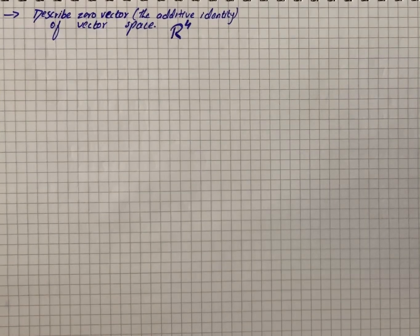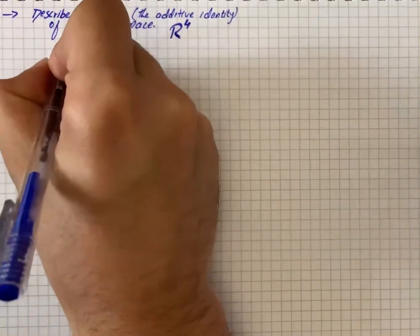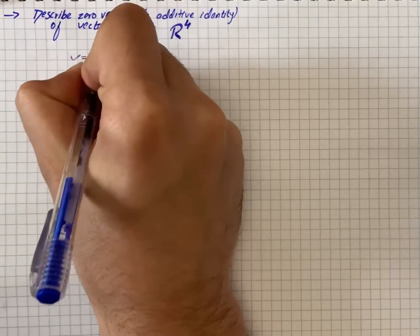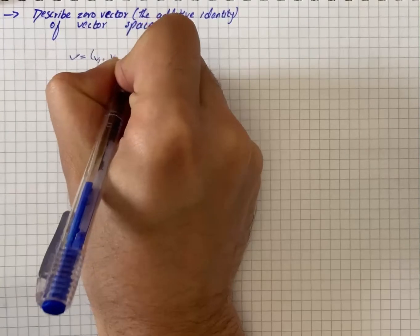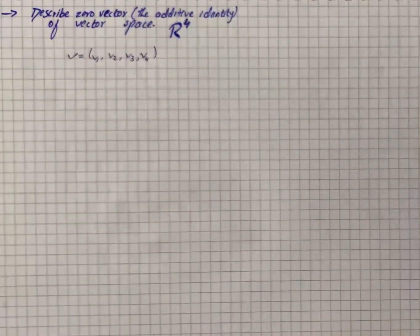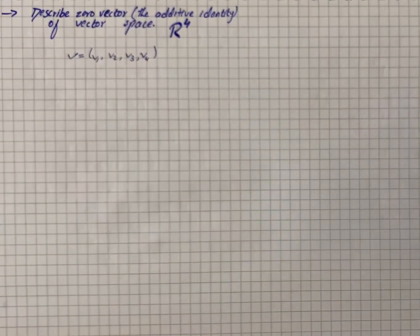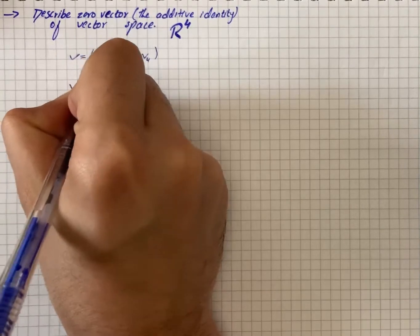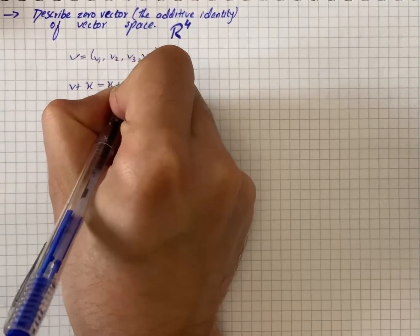Every vector in R4 can be written as V equals (V1, V2, V3, V4). We have to find the additive identity vector, the vector that has the following property: V plus X equals X plus V equals V.